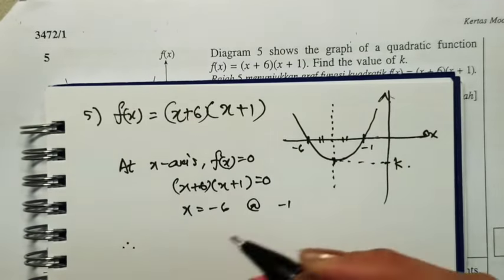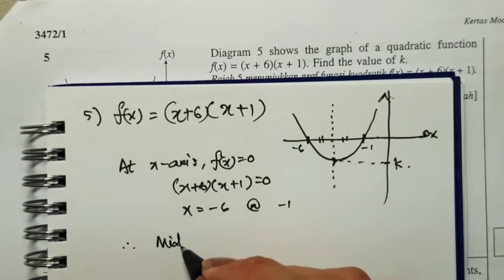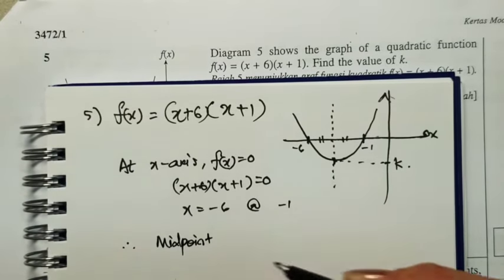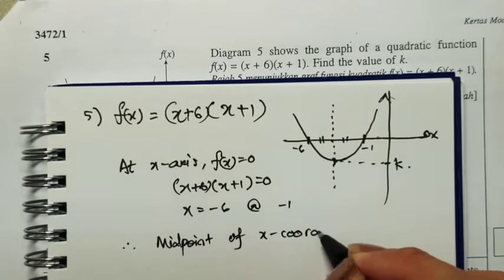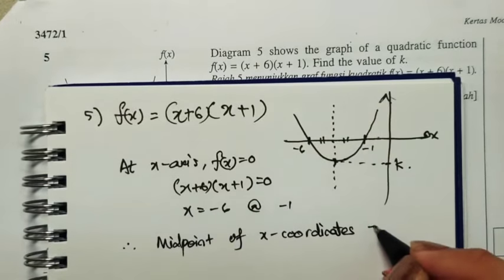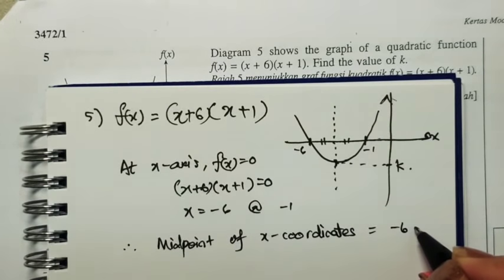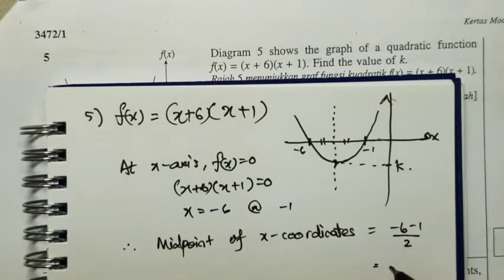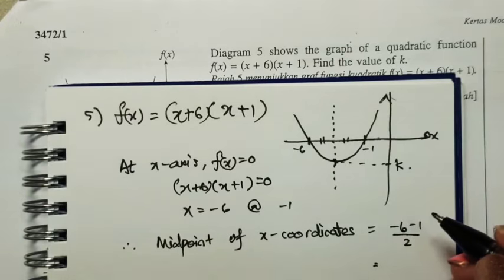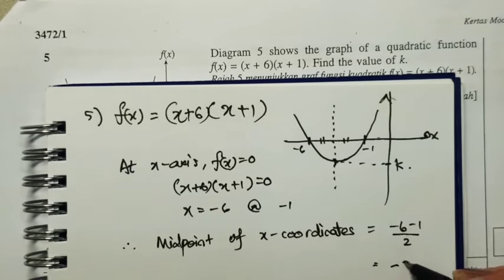So let's find the midpoint. We want to find the x here. Therefore, the midpoint of x-coordinates will be (-6 + -1) / 2, which equals -3.5.